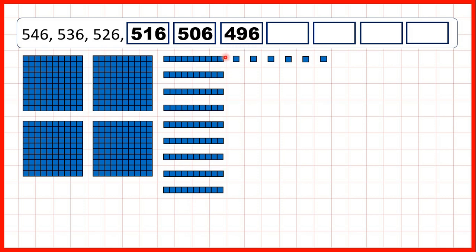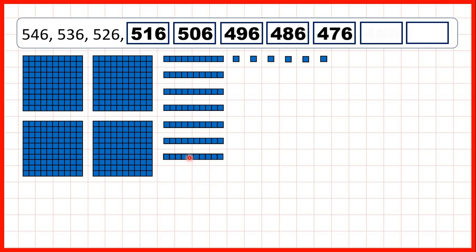So that's 4 hundreds, 9 tens, and we still have 6 ones. That makes sense if we think the number before 50 is 49. So when we're counting back in tens, the number before 506 is 496, because our ones digit stays the same. So then we can continue taking away a tens block each time, until we get to 456.